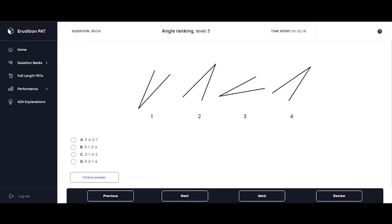This second example is from our level 3 angle ranking question banks, which is where we'll find a slightly more challenging problem. With this problem we're really going to need to ground ourselves and look over all the angles and see if anything stands out.